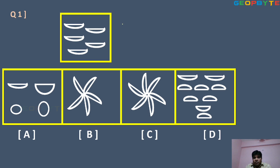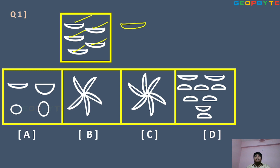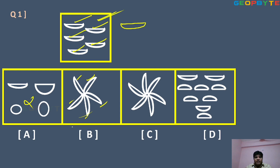Observe the first question. In the question figure, it is looking like a semi-circle. Total five semi-circles are given. By using these five semi-circles, which option is correct? In option A, two semi-circles are given — wrong answer. In option B, exactly five semi-circles are formed. By using the five semi-circles we are getting this figure, so option B is the right answer.